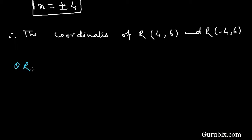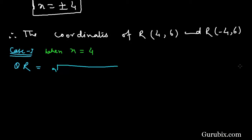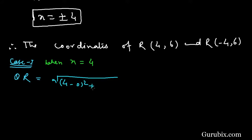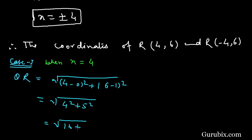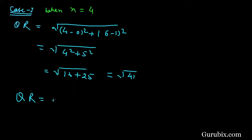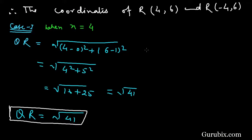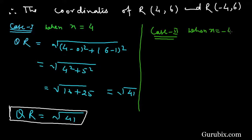Now we shall find the distance QR. There are two cases. In Case 1, when x = +4, the distance QR = √[(4 - 0)² + (6 - 1)²] = √[4² + 5²] = √[16 + 25] = √41. So QR = √41.